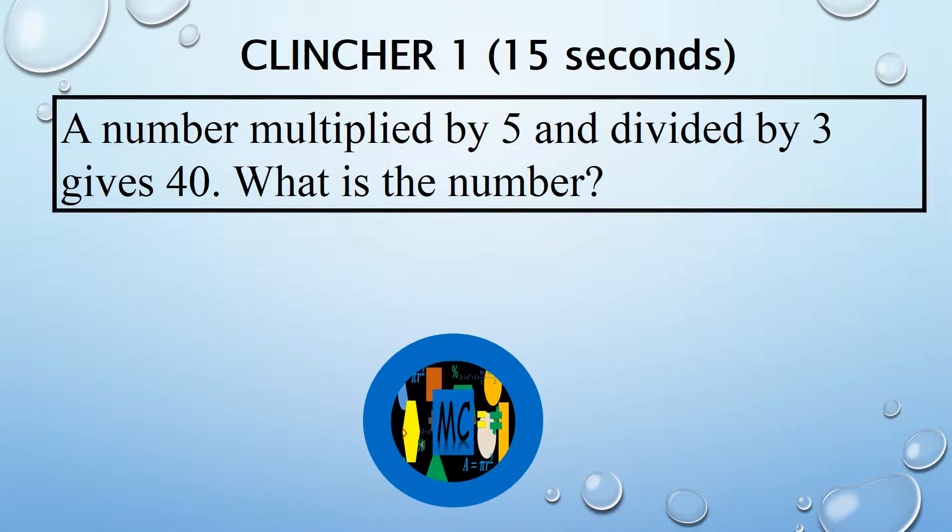A number multiplied by 5 and divided by 3 gives 40. What is the number?